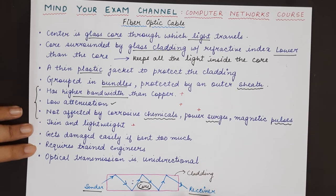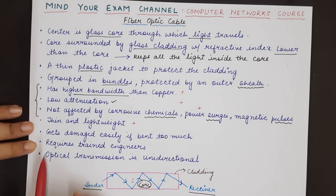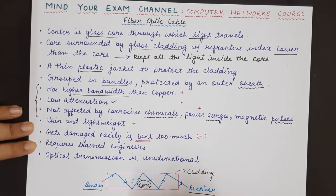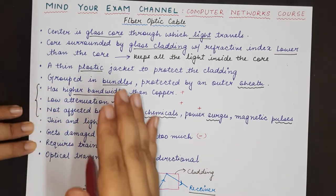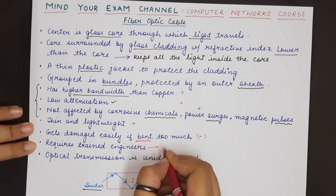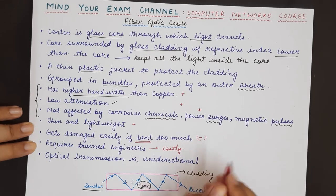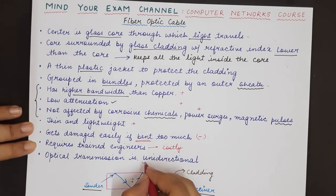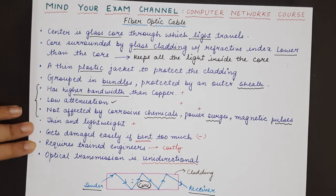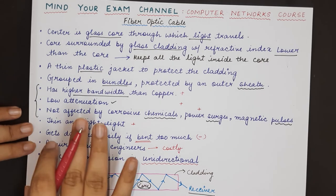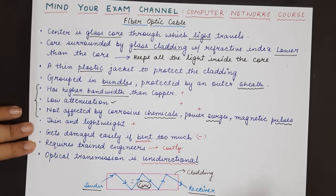Now coming to the disadvantages of fiber optic cables. Fiber optics get damaged very easily if they are bent too much. Also, laying down a fiber optic network requires trained engineers, and that is why it becomes a little costly to set up. The last point is that light is unidirectional — transmission through optical signals is unidirectional. So if you need to communicate from the sender to the receiver and also from the receiver to the sender, you need to lay down two different fiber optic cables.